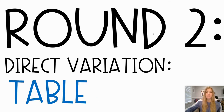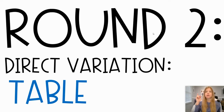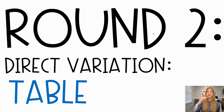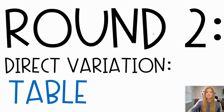Round two is figuring out the direct variation from a table. We're going to figure out from a table whether it is a direct variation or not. A couple of key things to remember: every direct variation goes through the origin, the x values should be increasing at a constant rate, and the y values should be increasing at a constant rate. It must be linear, and it definitely goes through the origin. If you don't see the origin in the table, you may have to interpolate or extrapolate.